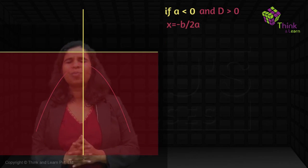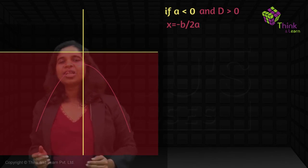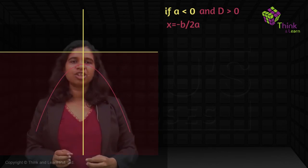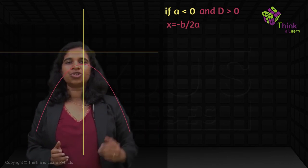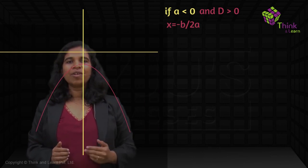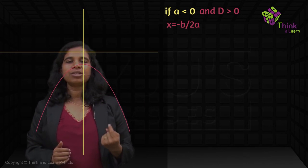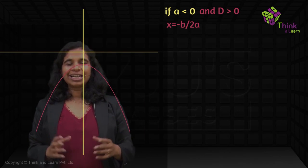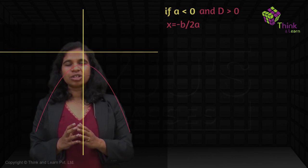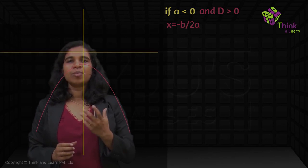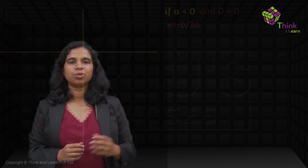So based on the same graph, you can figure out where the polynomial is positive or where it is negative. All you need to do is mark the roots and know whether the x-axis is cutting it at two points, one point, or no point. That will tell you where the polynomial is positive, where it is negative, and where it is 0.